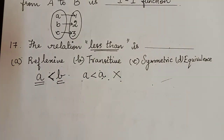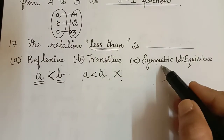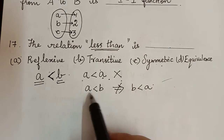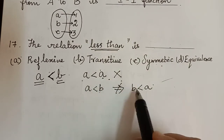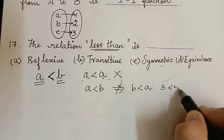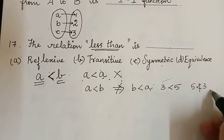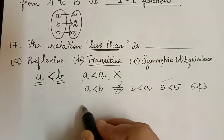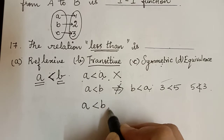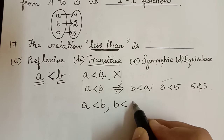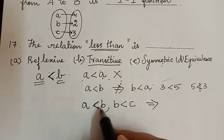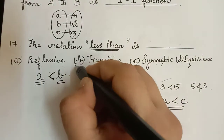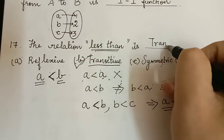It cannot be symmetric either, because A less than B does not imply B is less than A. When a number is lesser than another number, the other number cannot be lesser than this. For example, if 3 is lesser than 5, definitely 5 is not lesser than 3. So it is not symmetric. But the correct answer is that it is transitive, because if A is lesser than B and B is lesser than C, then we can say A is lesser than C. Therefore the relation 'less than' is transitive.